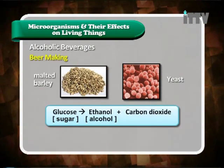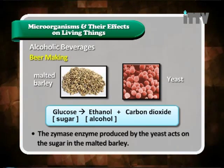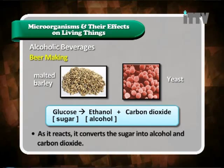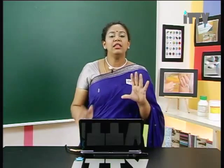Let's look at alcoholic beverages. In beer making, a type of yeast is added to malted barley. The zymase enzyme produced by the yeast acts on the sugar in the malted barley. As it reacts, it converts the sugar into alcohol and carbon dioxide. Malted barley is a form of glucose, and this all happens in a fermentation process where yeast produces the special enzyme zymase to break down glucose and produce alcohol. Beer uses barley, while wine uses grapes.